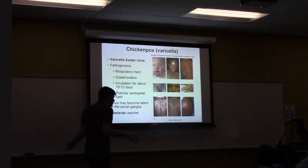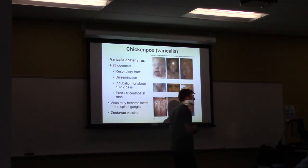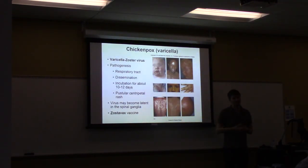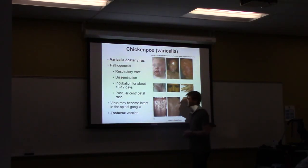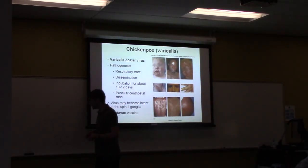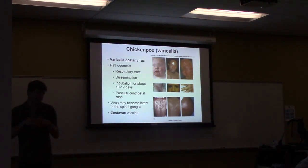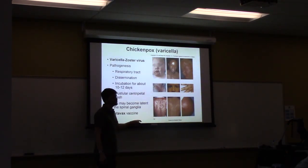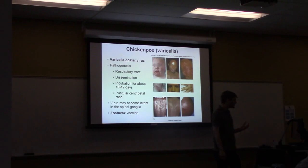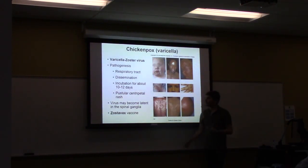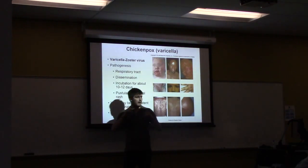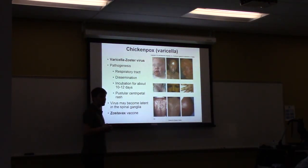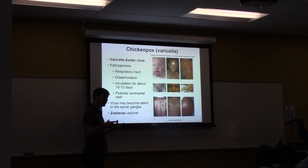Shingles is reactivated latent VZV in the root ganglia. Wherever the virus has been dormant determines where the rash develops. It wakes up, travels down the innervated nerve, and causes a red, very painful rash — unlike chickenpox which is itchy but not very painful. This is because it's affecting nerve and sensory tissue. Around 1990, the Zostavax vaccine was developed to prevent this infection. Anyone born after 1990 has likely had the chickenpox vaccine. If you get chickenpox as a young child it's mild and self-limiting; if you get it as an adult it can be more serious, particularly in men as it can target the testes.